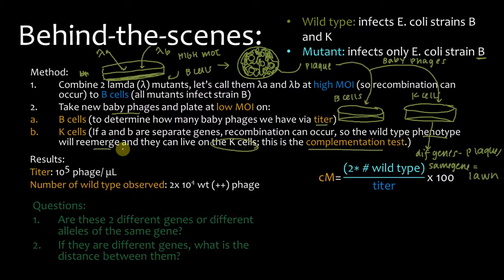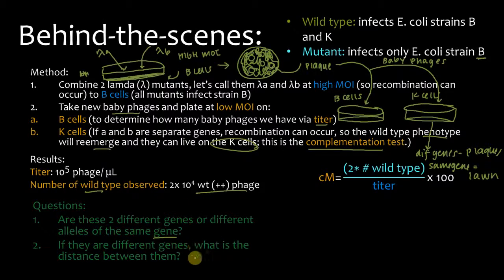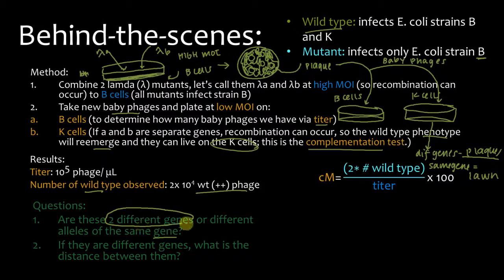Here are the results. We did this experiment and observed: the titer is 10 to the fifth phage per microliter, and the number of wild type observed was 10 to the fourth. So the first question is: are these two different genes or two alleles of the same gene? We observe plaques, which indicates wild type — the wild type has reemerged. So if we see the wild type, that means they complemented, and are therefore on different genes.